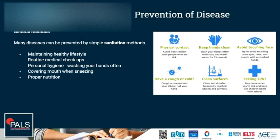Prevention of disease: how can we prevent ourselves from getting infected, or prevent others from getting infected? Some general methods — many diseases can be prevented by simple sanitation methods, maintaining a healthy lifestyle, routine medical checkups, personal hygiene like washing your hands regularly, covering your mouth when you sneeze, and proper nutrition to keep your immune system strong.